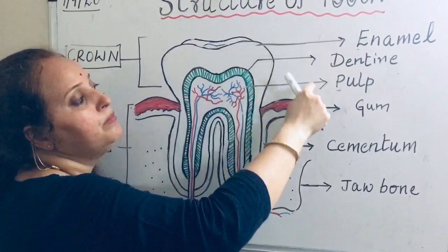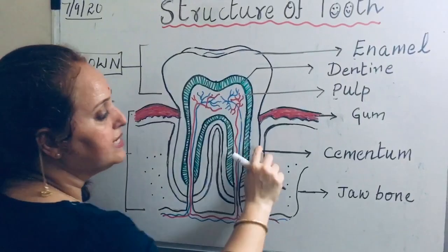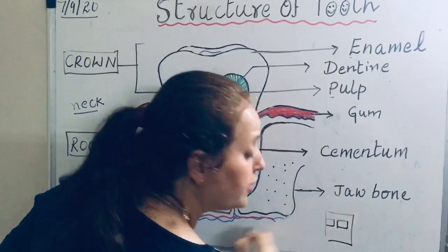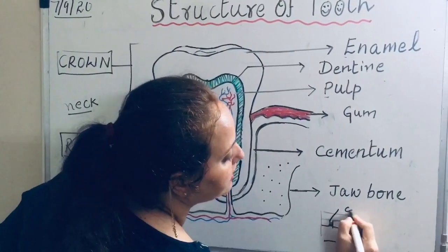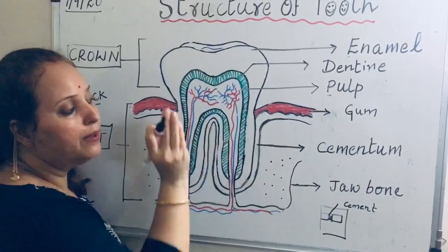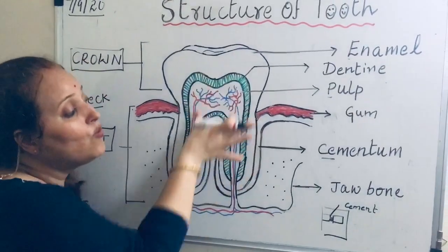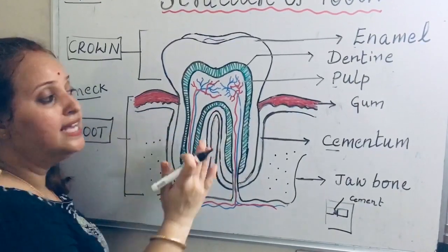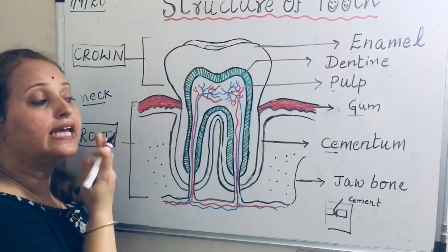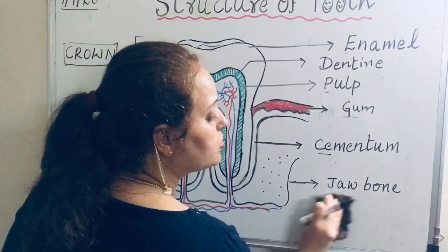These are the three main parts: enamel, dentine, and pulp — the soft tissue with nerves and blood vessels. Just like a mason fixes bricks with cement to make a wall, similarly to fix the root into the jaw there is a cement-like tissue called cementum. The lower portion of every tooth is also covered by a pink-colored soft tissue, which is called gums — the soft pink layer you can see covering the lower portion of the teeth when you open your mouth.